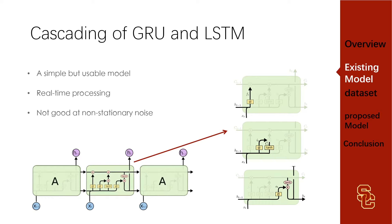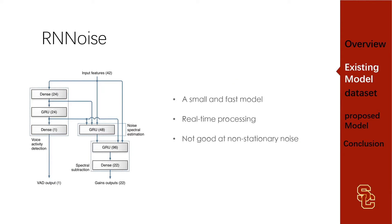We also tried another model, RN Noise. In RN Noise, it uses GRU units because GRU behaves better than LSTM in denoising. Based on our experiments, its noise reduction performance is better than the cascading LSTM model, and it is fast with a small and convenient model size. However, it is not good at handling non-stationary noise.